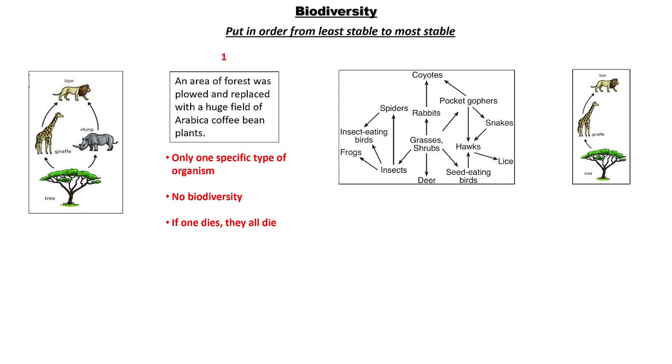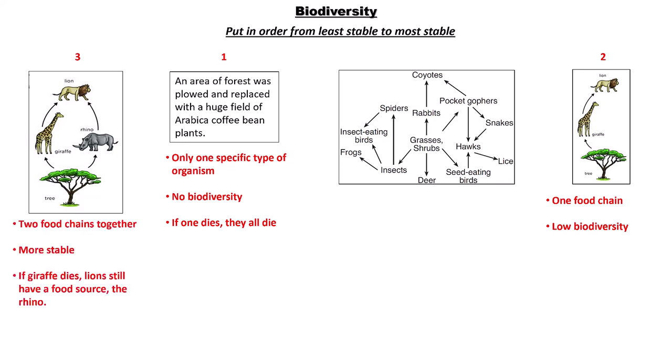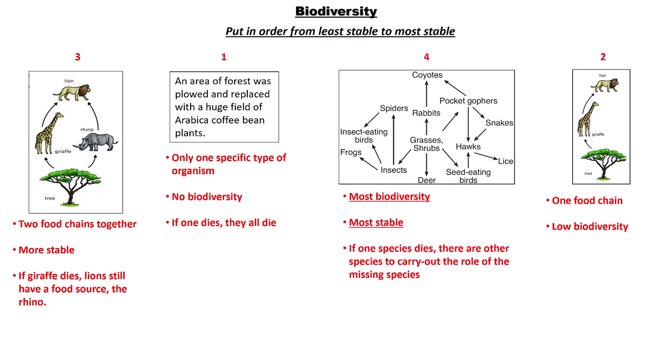Second least stable would be all the way to the right — only one food chain, very low biodiversity. Three would be over here — a little more biodiversity because now if the giraffe dies, the lions will still have rhinos to eat. And the most stable, right here. It has the most biodiversity, therefore it's the most stable. If one species dies, there are plenty of other species to carry out the role of the missing species. That's why biodiversity creates stability.